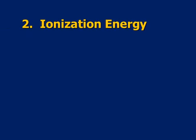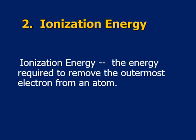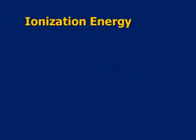Next we're going to look at ionization energy. Our definition is the energy required to remove the outermost electron from an atom — so this could be like a valence electron. This is going to depend on the size of an atom. If an atom is really big it's going to be easy to take an electron away. If an atom is really small it's going to be much more difficult — that atom's going to put up a big fight to keep its electrons.